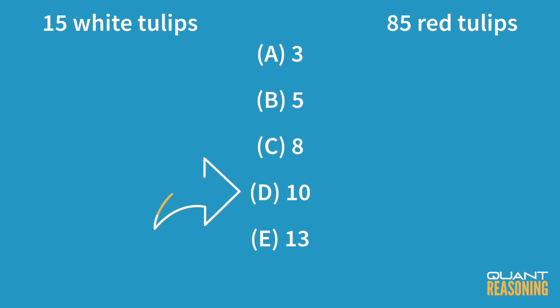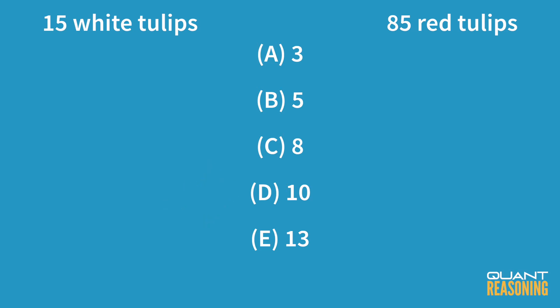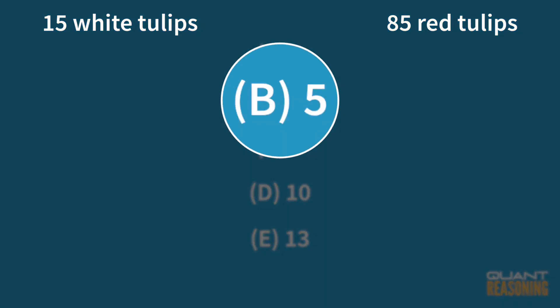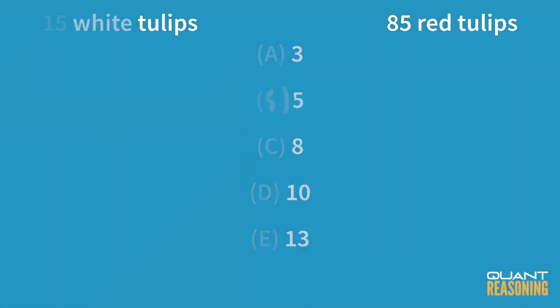Could 10 be the answer? Could we have 10 bouquets? How many white tulips would be in each bouquet then? How many red tulips? That answer choice doesn't make sense either. What about 13? If you have 13 bouquets, how many white tulips go in each bouquet? None of these answer choices make sense except for 1, so 5 must be the right answer.